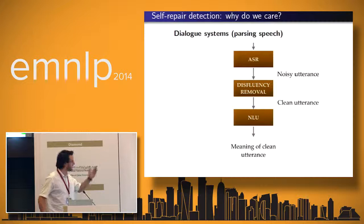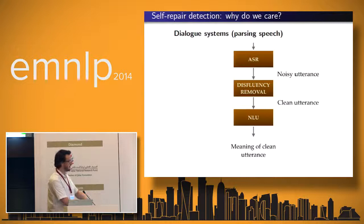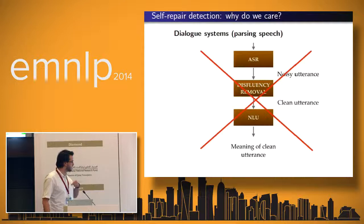But why do we care in this community about this kind of thing? Well, the traditional approach is to treat disfluencies including self-repairs as noise in the signal which we want to remove before we do some more interesting parsing and interpretation of the utterance. So it goes from noisy utterance to clean utterance and then we get the meaning of the clean utterance. That's a good approach, right? I'm going to say no, that's actually not a good approach for several reasons.